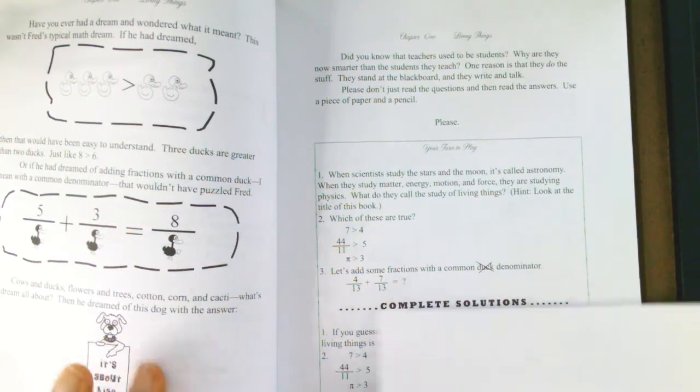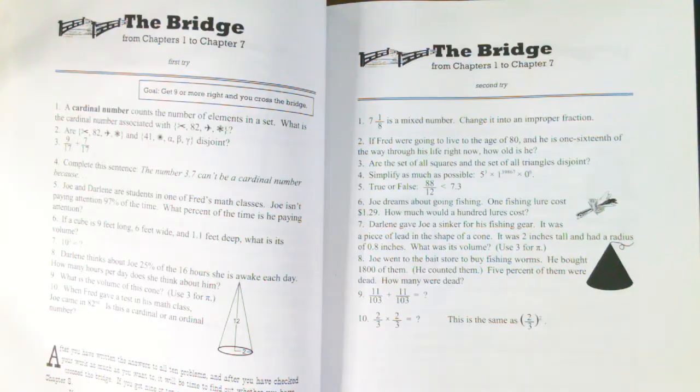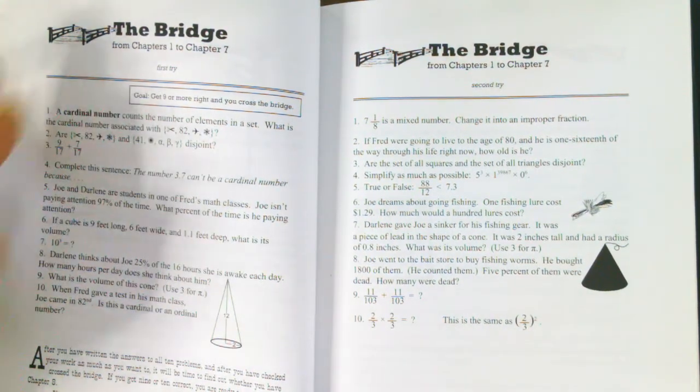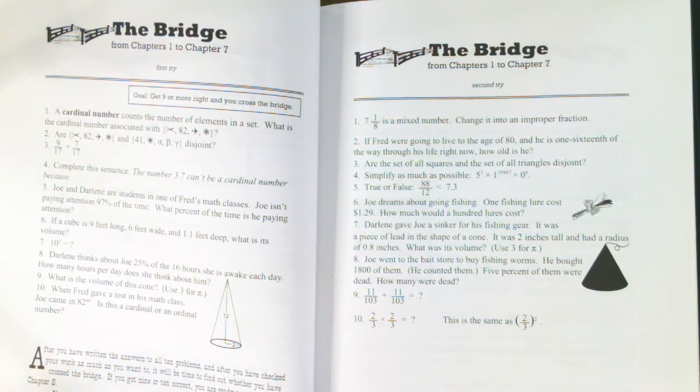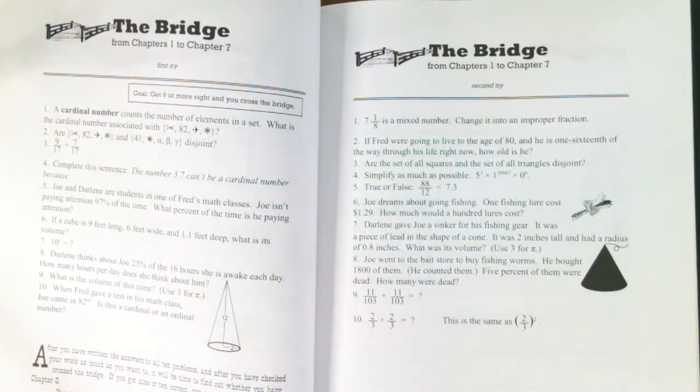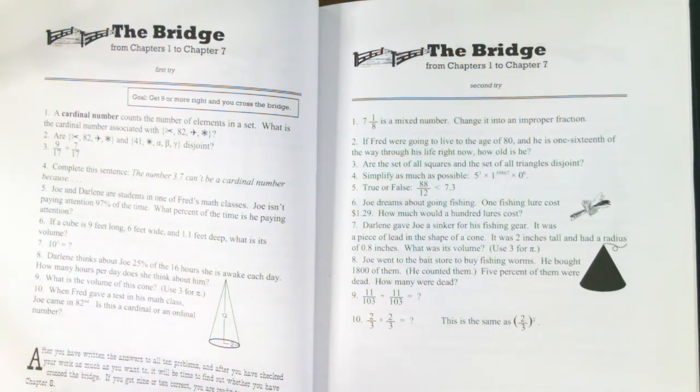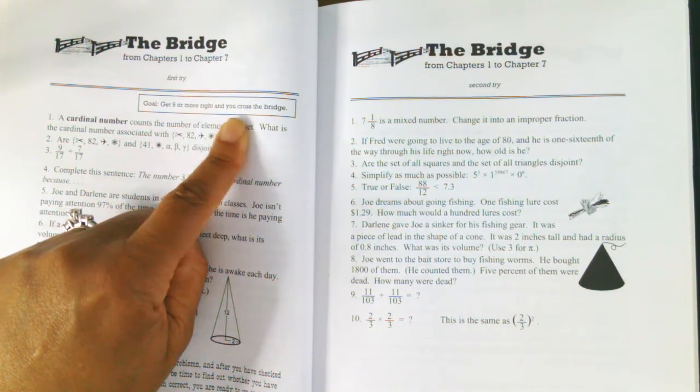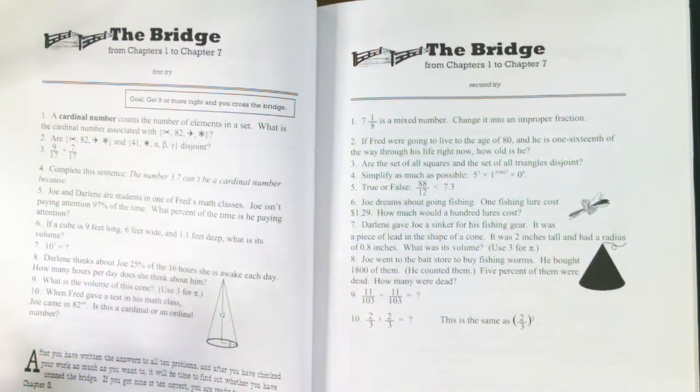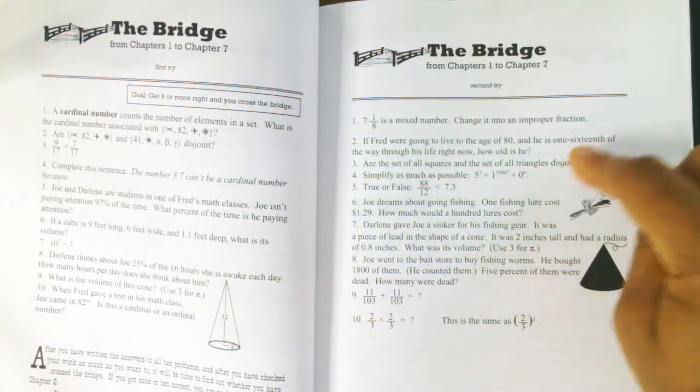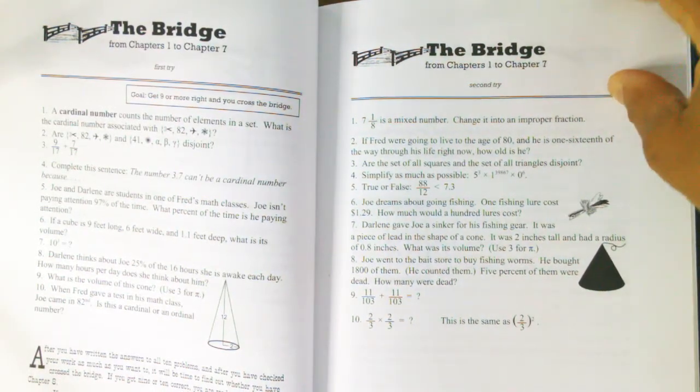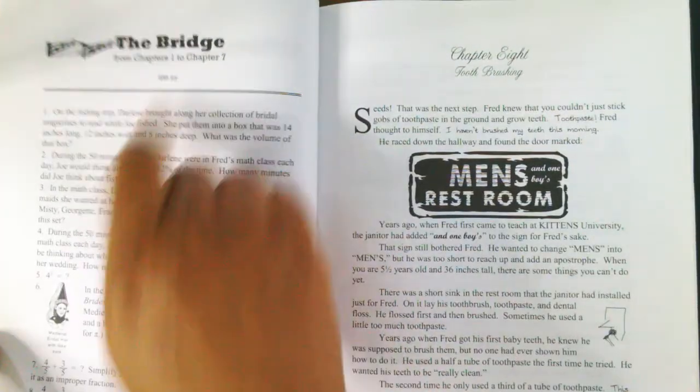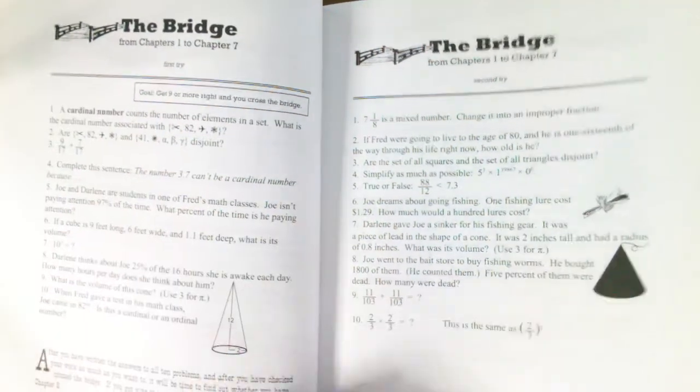You open that page and you cover. Now we get to the Bridge, and this is what I want to show you, is that the Bridge is a quiz or a test and your student gets five tries. The whole thing is here. The goal: get nine or more right and you cross the bridge. So if they get nine or more of these right, they do not have to do the second try, the third try, the fourth try, or the fifth try. They get to cross the bridge over into the next chapter.